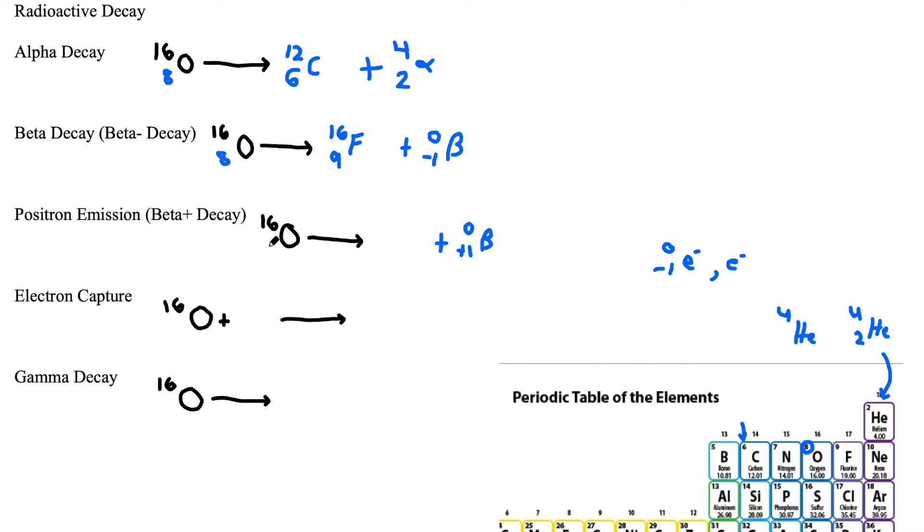We can do the same thing now that we have that plus 1 for our atomic number of a positron. We can put an 8 for our atomic number of oxygen. Since we have 8 on this side and 1 on this side, we need a 7 to balance things out. And a 7 corresponds with nitrogen on our periodic table. Again, we need to balance out the atomic mass, which is 16 on the left side. And again, it has to be 16 on the right because our positron has a negligible mass.